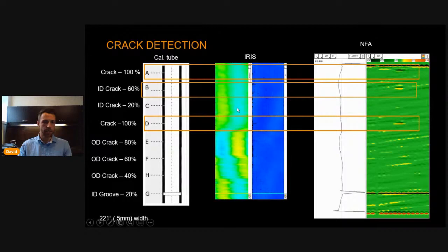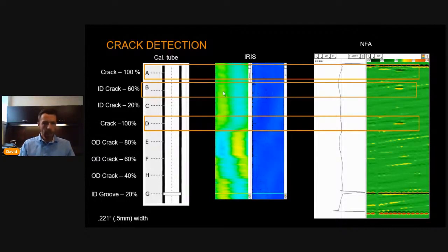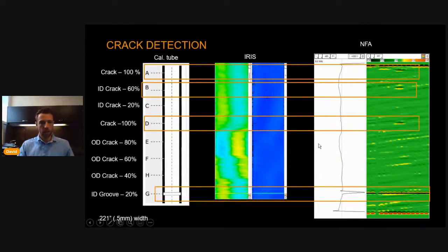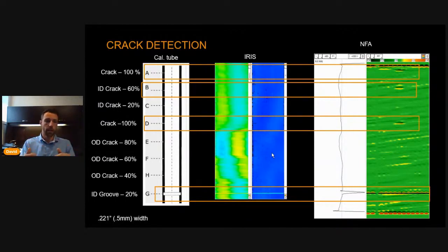The next was an ID crack at 20% — very small, so we were not able to pick it up. Keep in mind these are 0.5 millimeter width cracks, or 0.021 inches width — very, very small. For the OD cracks, as expected, we were not able to pick up any of those as they are outside and very small, but neither was IRIS capable of detecting those cracks. So we see that NFA really offers a lot more for crack detection compared to IRIS.